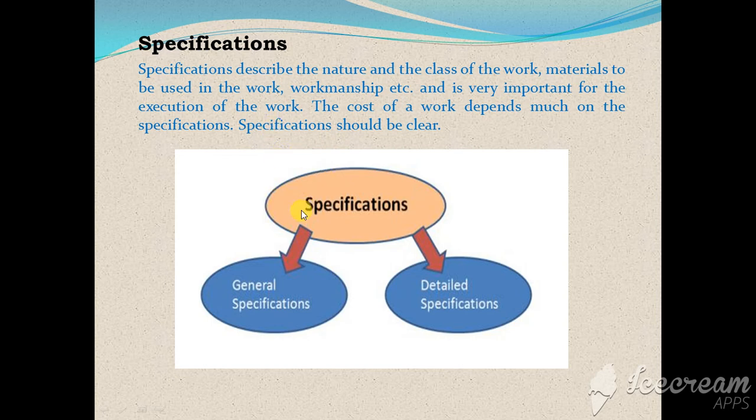Generally, the specification is divided into two different categories: one is general specification and one is detail specification. In general specification, these all things are being mentioned, but in detail specification all the details related to the quality of material, proportions, the preparation of the material, and all these things are being mentioned.